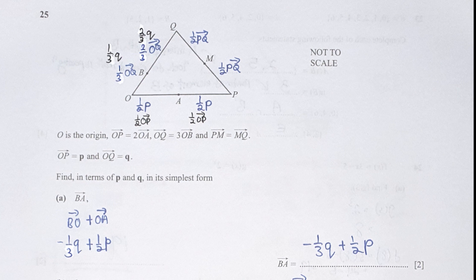BA. So for you to get to BA, it will go through BO plus OA. So based on what the information we have, we have OB as 1 over 3Q. However, since we are looking for BO, we are required to add a negative into it. So we have negative 1 over 3Q plus 1 over 2P.